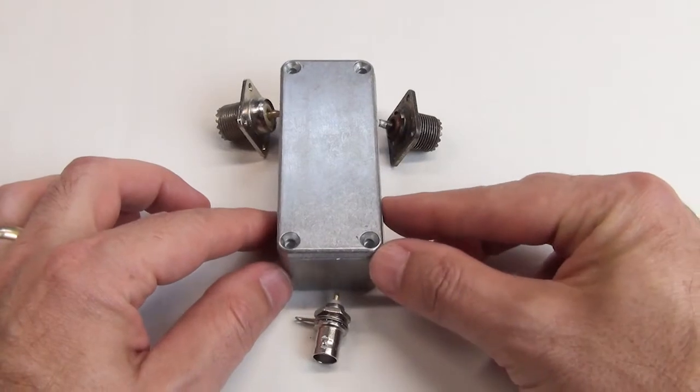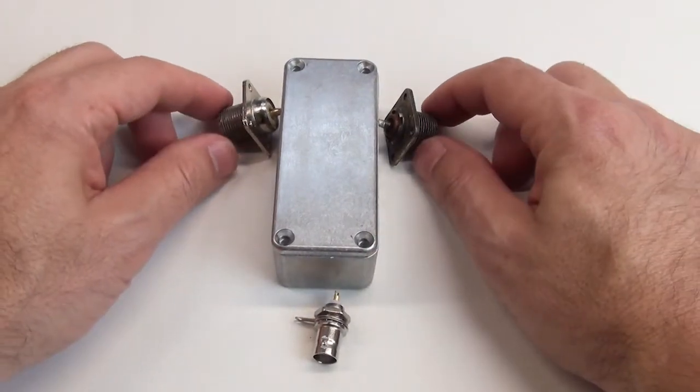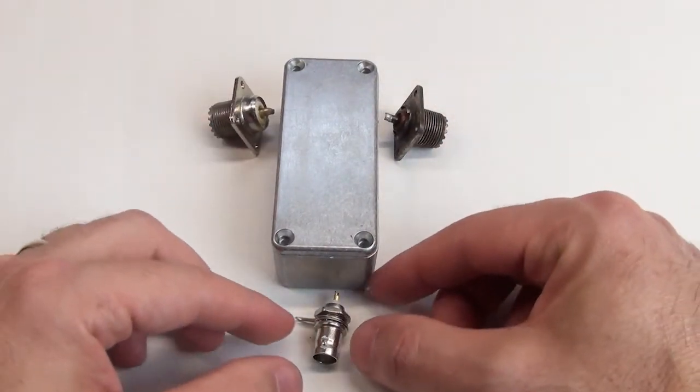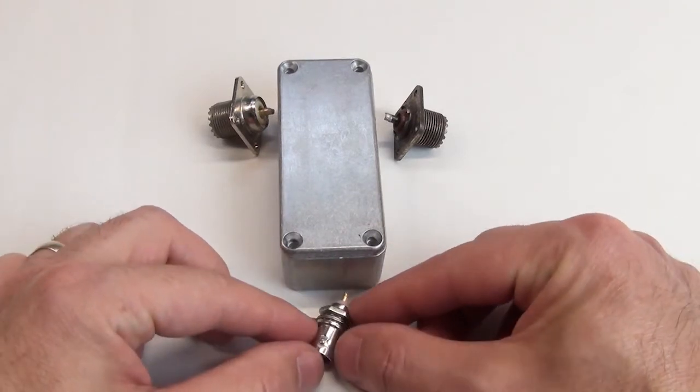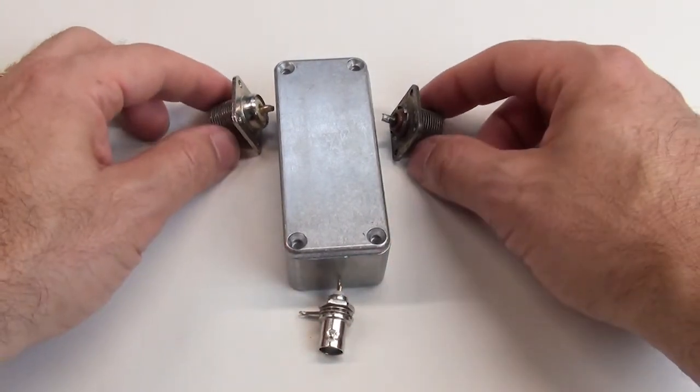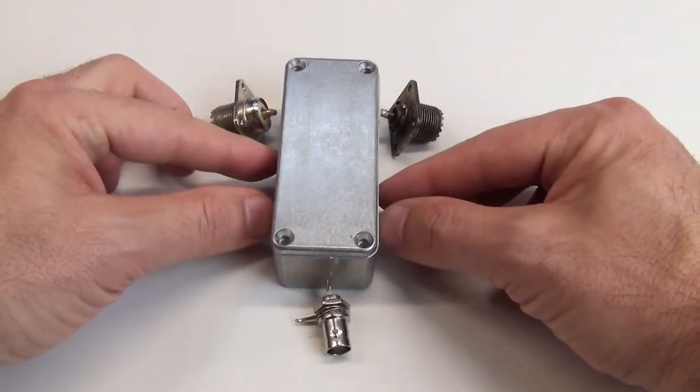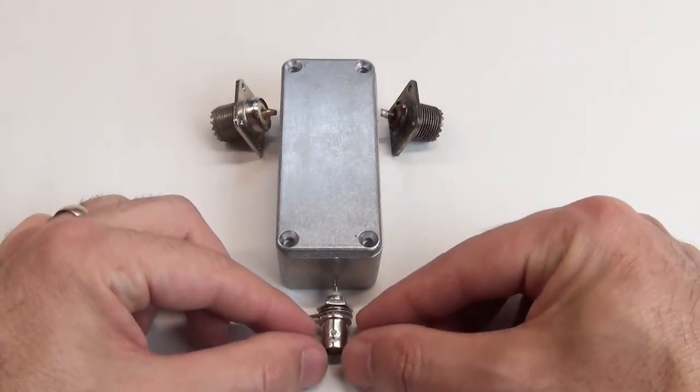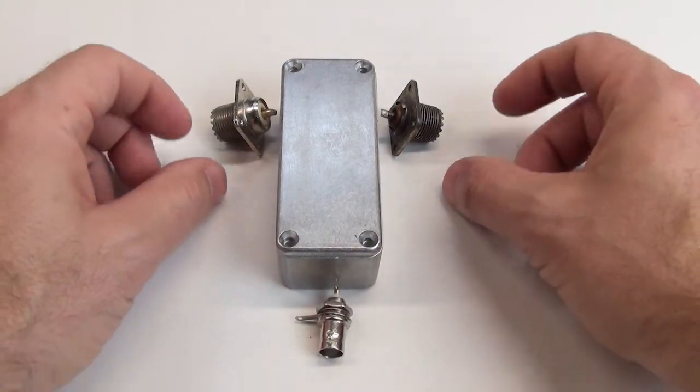You'll need three connectors. For my version I'm using two SO239 bulkhead connectors and one BNC female connector. I chose those because my intended applications are mostly going to be with HF gear. The design is sufficiently accurate up to about 500 megahertz, so you could use N connectors or all BNC if that's your preference.